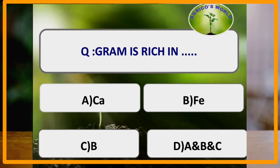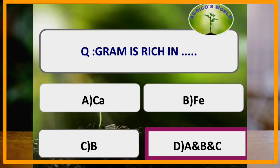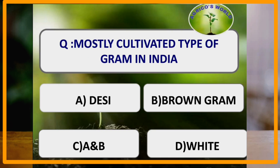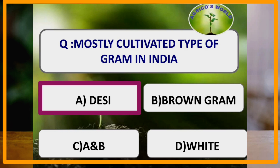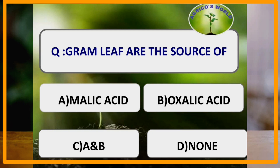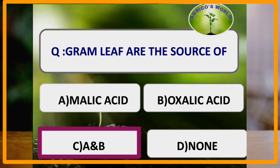Gram is rich in which of the following nutrients? Gram is rich in calcium, iron and boron. Mostly cultivated type of gram in India is Desi type, which is cosmopolitan in nature but has small sized seeds. Gram leaves are the source of malic acid, oxalic acid and also citric acid to some extent, and these acids are used for curing intestinal problems.